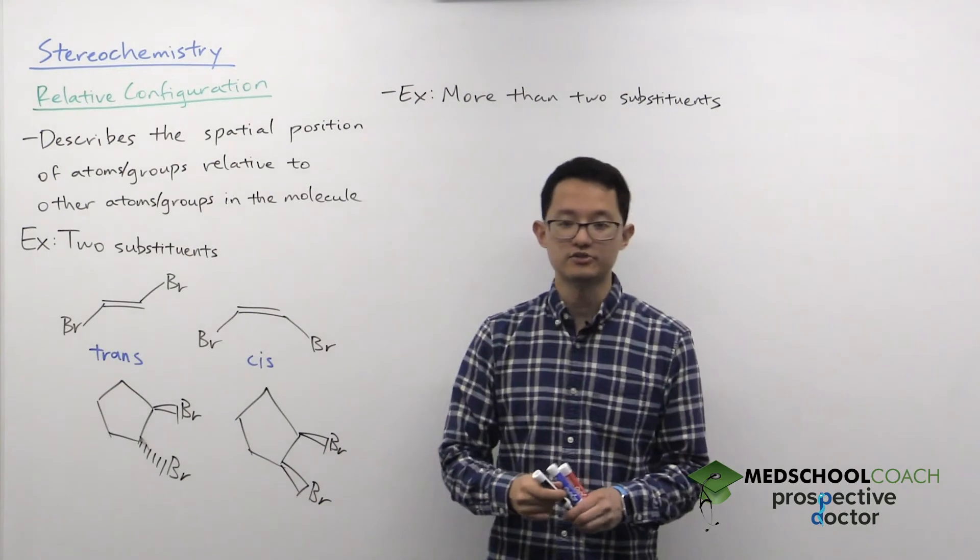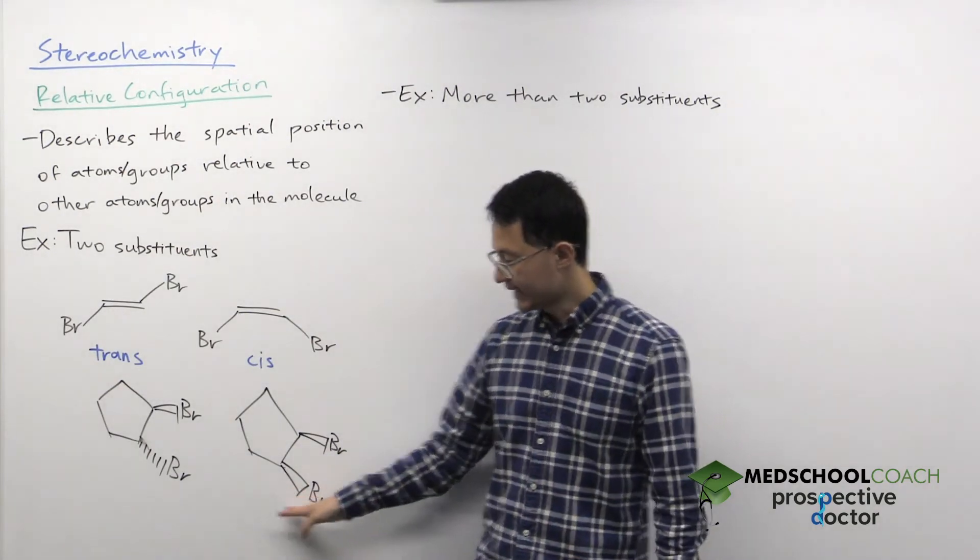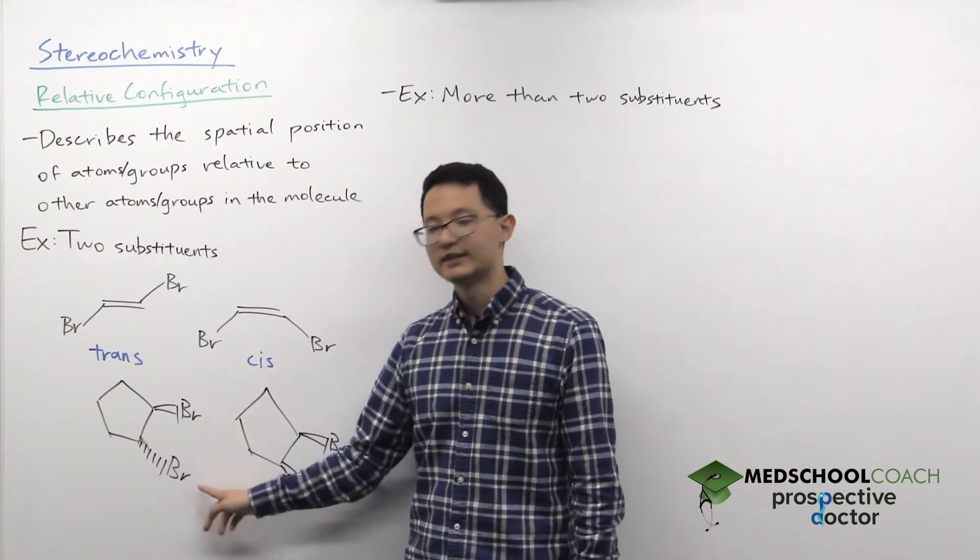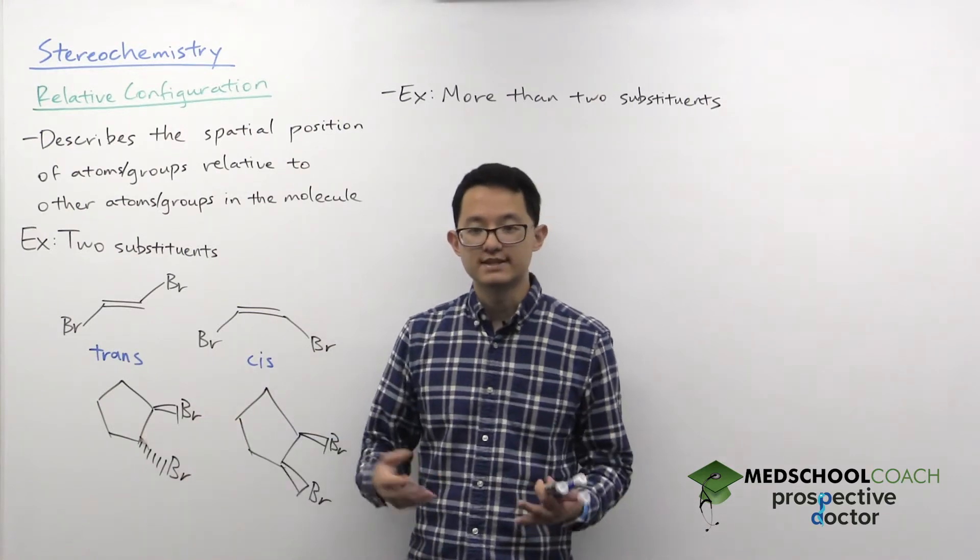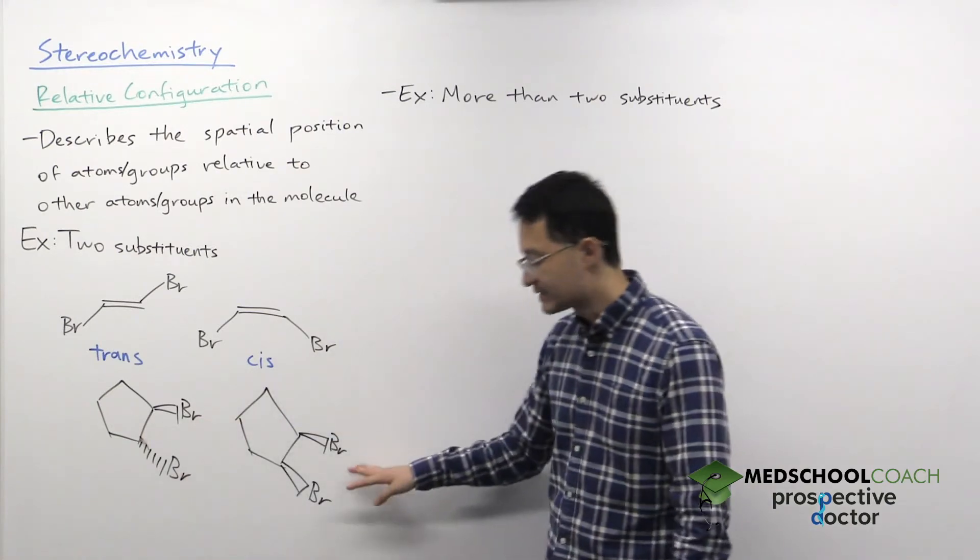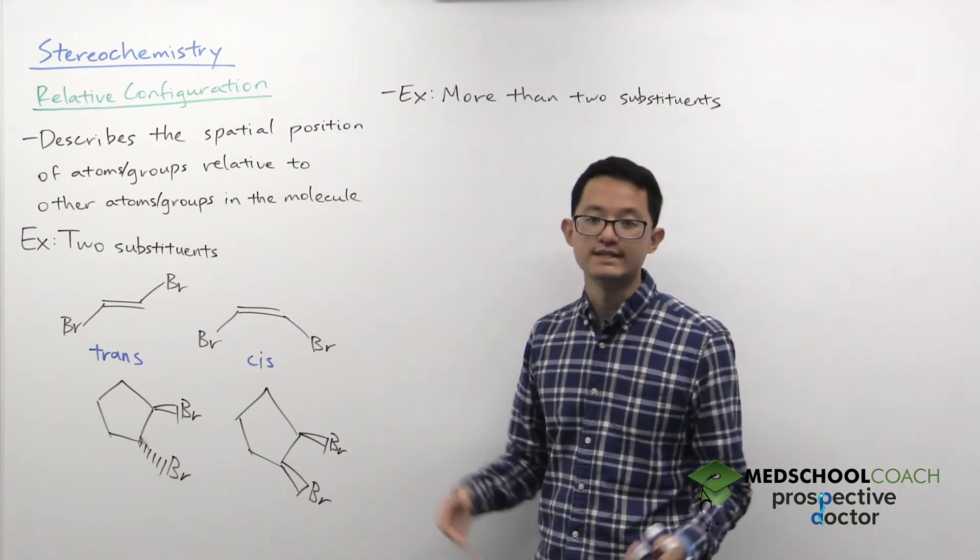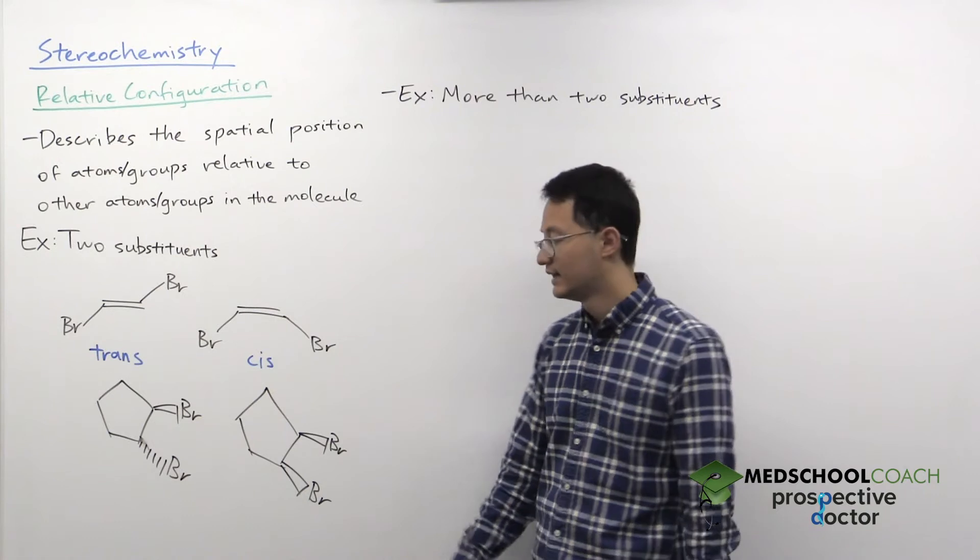So here I've drawn two molecules. And again, this molecule is trans because you can see in the ring, the two bromine atoms are on opposite sides of the ring. In this molecule, this is cis because the two bromine atoms are on the same side of the ring.